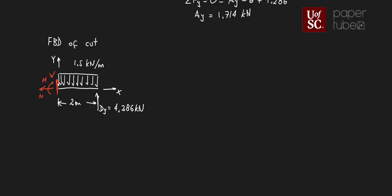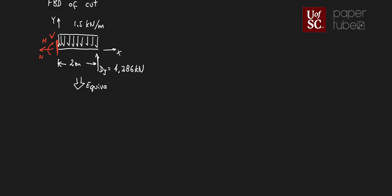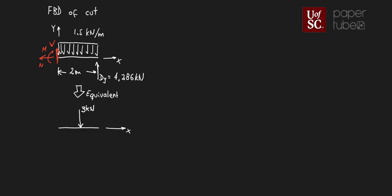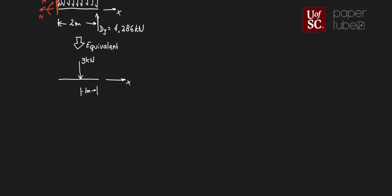Since we can't work directly with a distributed force in the equilibrium equations, I do the equivalent point load again for this segment. The equivalent point force is right in the middle of those 2 meters — the centroid of the rectangle — with a magnitude of 3 kilonewtons. That distance from the cut is 1 meter, and the remaining distance to D is another meter. The internal forces — shear, bending moment, and normal force — remain as drawn.